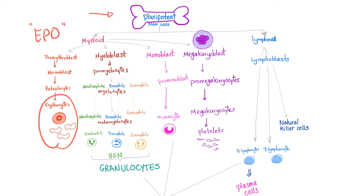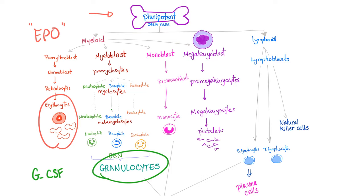To make your bone marrow produce granulocytes, use G-CSF — Granulocyte Colony Stimulating Factor, which is a morphogen. To induce monocyte production, use M-CSF — Monocyte Colony Stimulating Factor. For platelets, it's TPO — thrombopoietin. So we have erythropoietin for erythrocytes and thrombopoietin for thrombocytes.